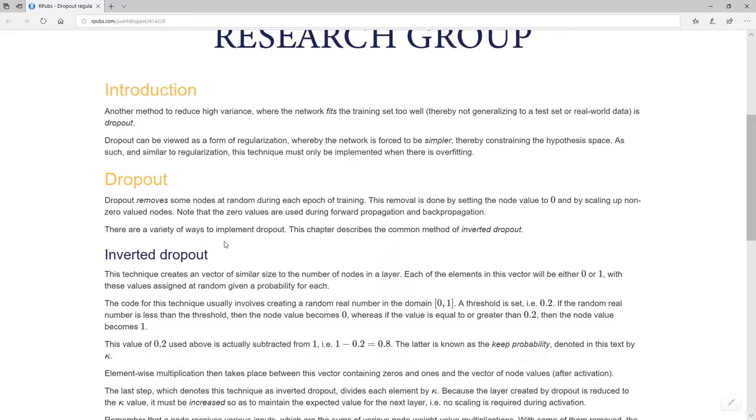What dropout does is remove some of the nodes. It doesn't actually remove them, they're still there, but it creates a zero so the value of that node becomes zero. If we have a couple of nodes in a layer become zero, that is very much the same thing we achieve with L2 regularization, whereby we drive the value of those parameters to zero, giving us during the multiplication stage values close to zero for those nodes.